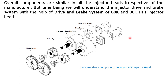The drive and brake system of the 60K injector head is shown here. As we can see, the main components include a pair of hydraulic motors, a pair of disc brakes, a pair of planetary gear reducers, a pair of drive sprockets, and a pair of timing gears.